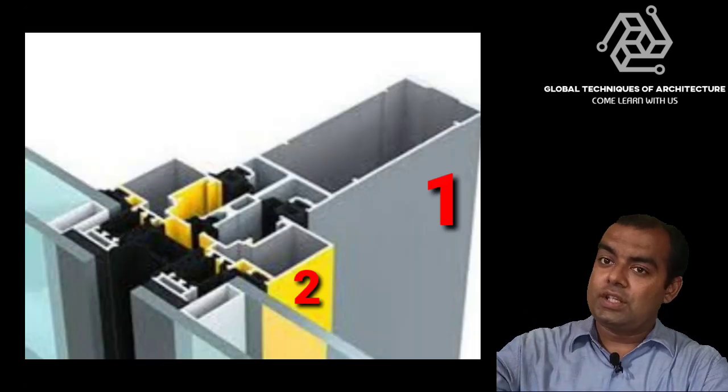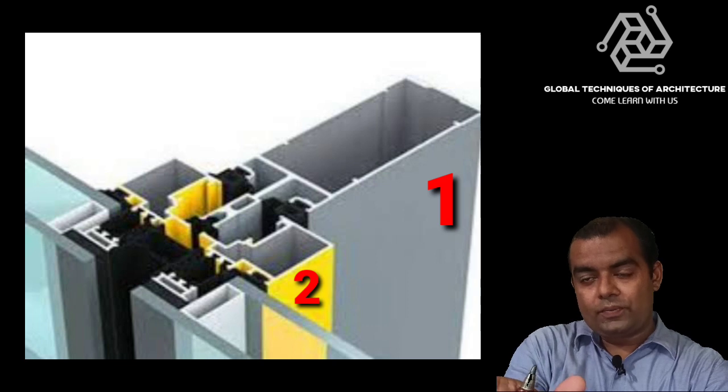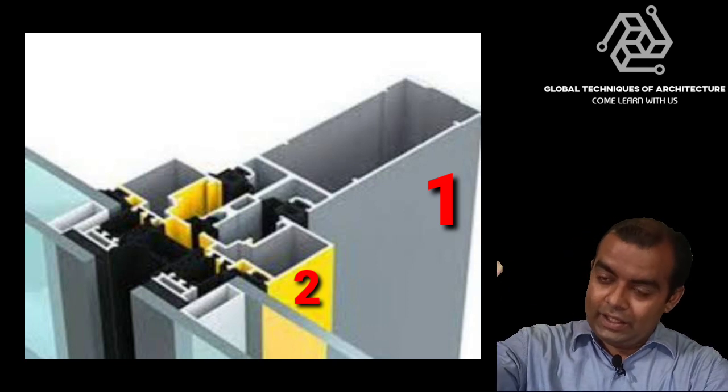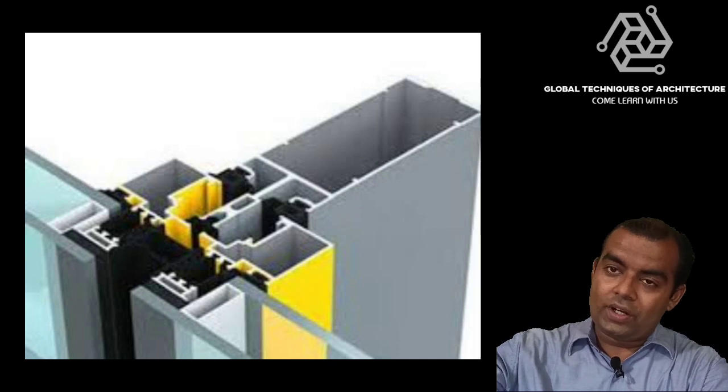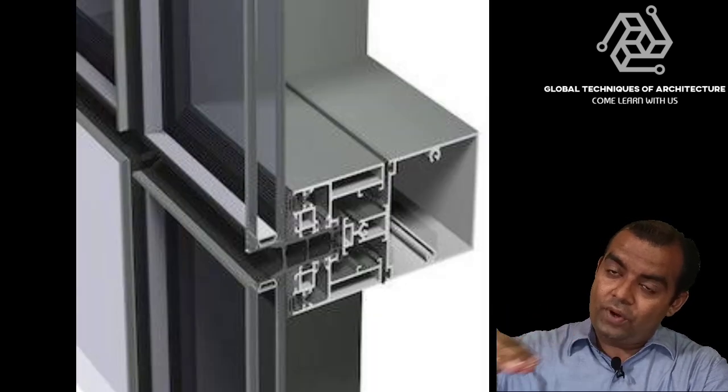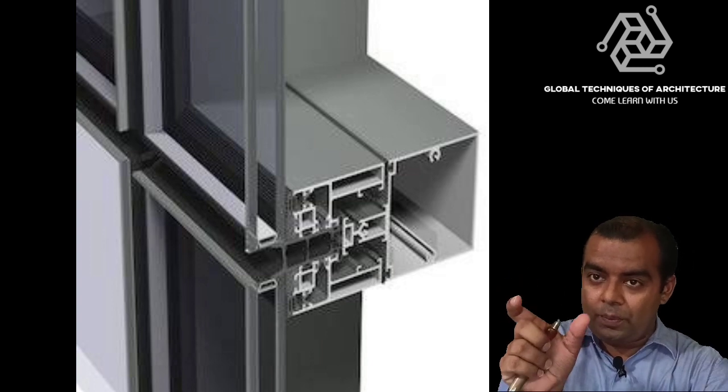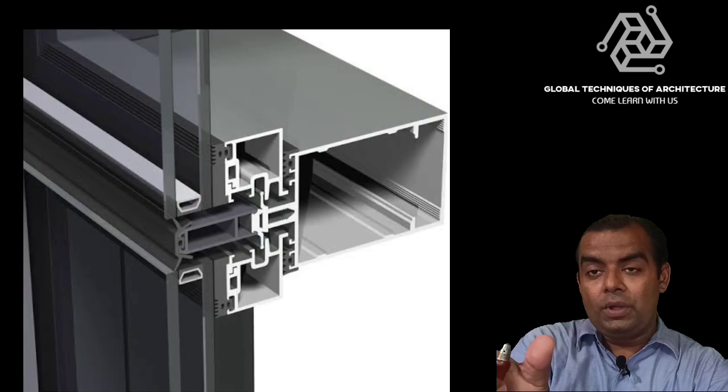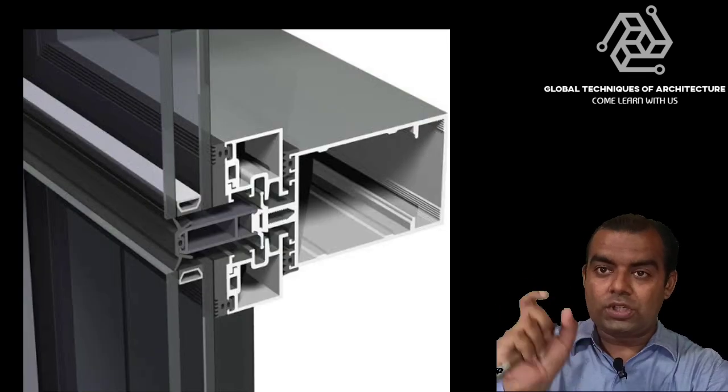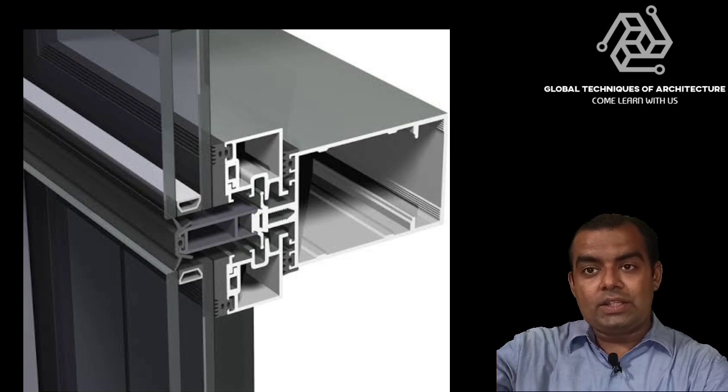And if at all it's a semi-unitized system, it would be two boxes or say one box. Then there is a partition line. It can be with the help of a gasket. It can be a flush detail wherein it would be the same size of the main frame and the subframe. There can be a step one also. So step transom detail, we also call it.